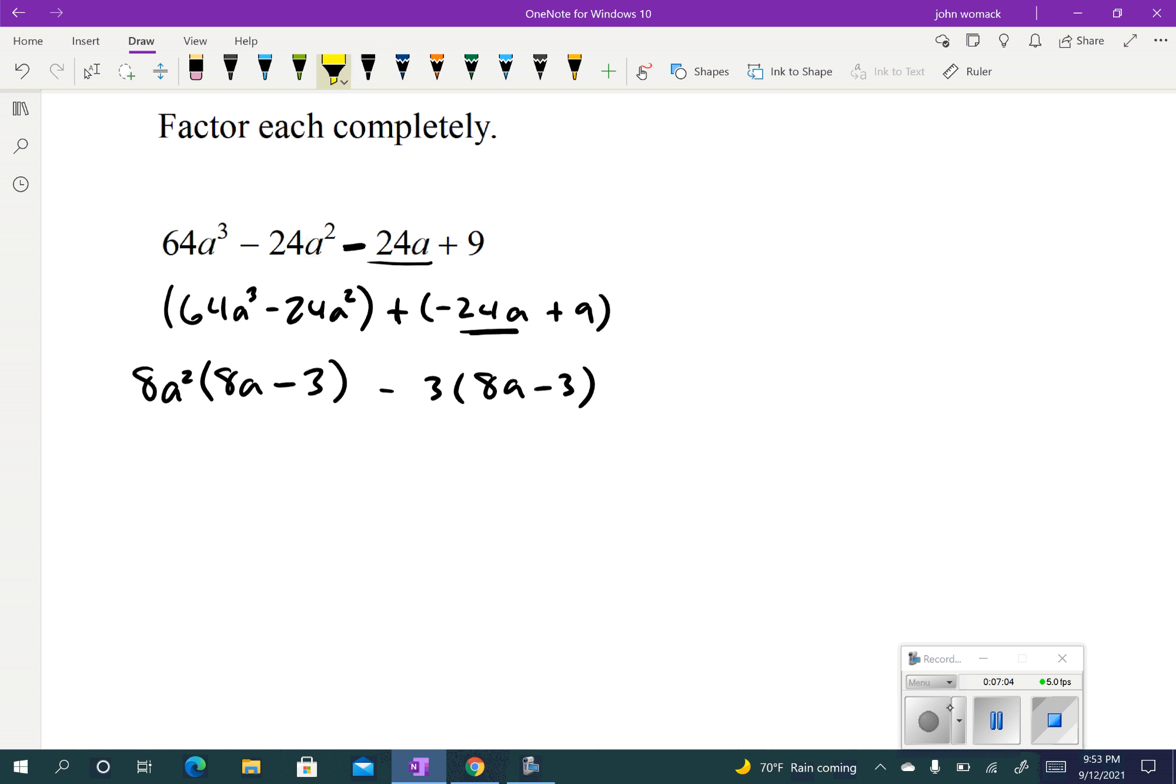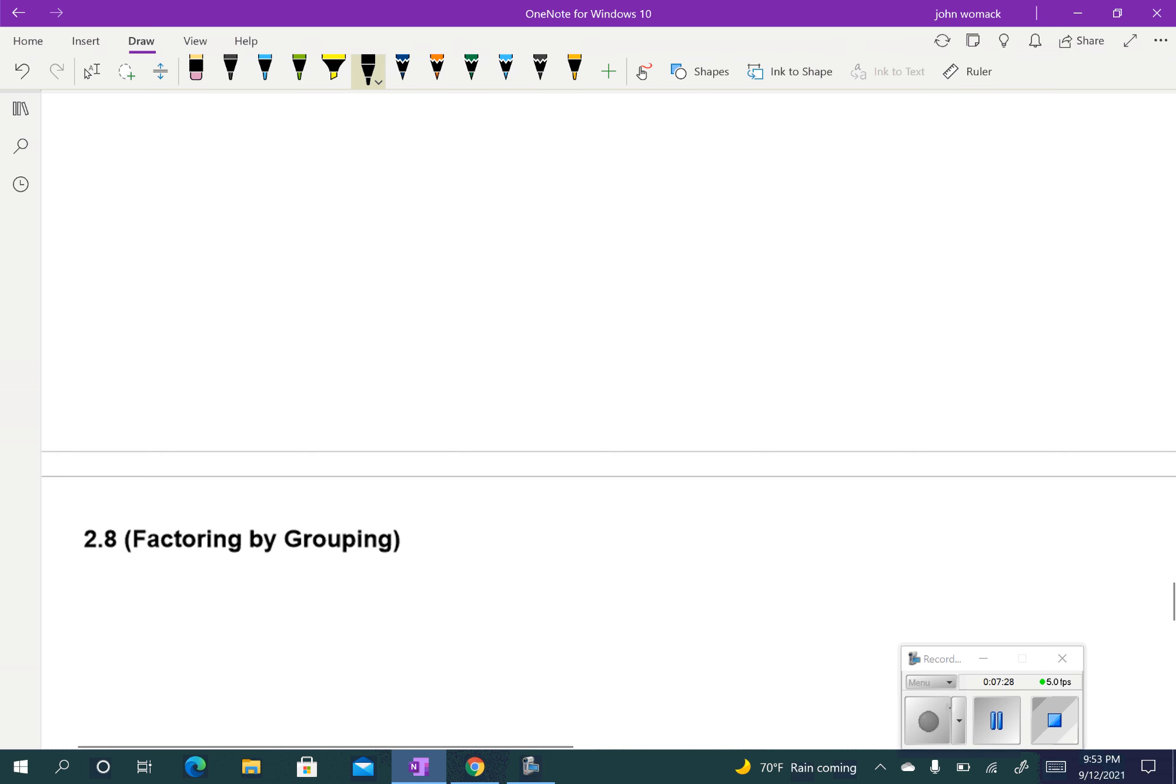When I look right there for this to work again, I've got to have those match up, which they do. So I take that out of both of them. The 8a minus 3 goes out in front. And then I put what's left. That leaves me with an 8a squared minus 3. And if you want to check your answer, you just multiply it back out and double check. So if you've got that on your own, that's awesome. Again, I'm sorry I gave you that example to try on your own where we hadn't practiced it with a minus in the middle there.